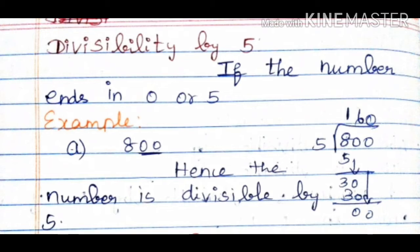For example, the first number is 800. The last digit is 0, so we check divisibility by 5. 800 divided by 5: 1 five is 5, subtract from 8, remainder 3. Bring down 0, 6 fives are 30, 30 minus 30, remainder is 0. So 800 is divisible by 5.